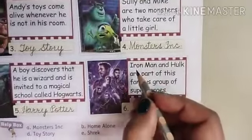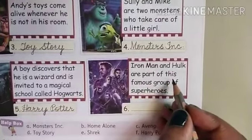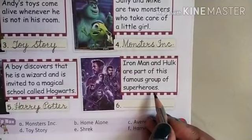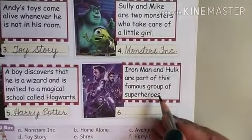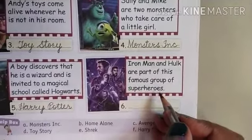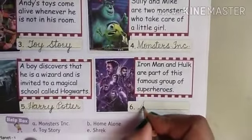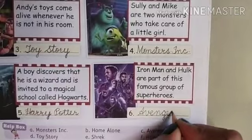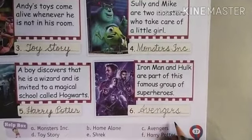Sixth clue: Iron Man and Hulk are part of this famous group of superheroes. This movie is about superheroes — Iron Man and Hulk are part of this group. The name of the movie is Avengers — A-V-E-N-G-E-R-S, Avengers.